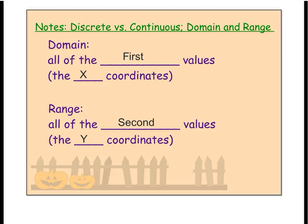The first is domain. Domain is thought of as all of the first values, which we'll talk about in a little bit, or it's the x-coordinates. And range is all of the second values or more commonly talked about, it's the y-coordinates.